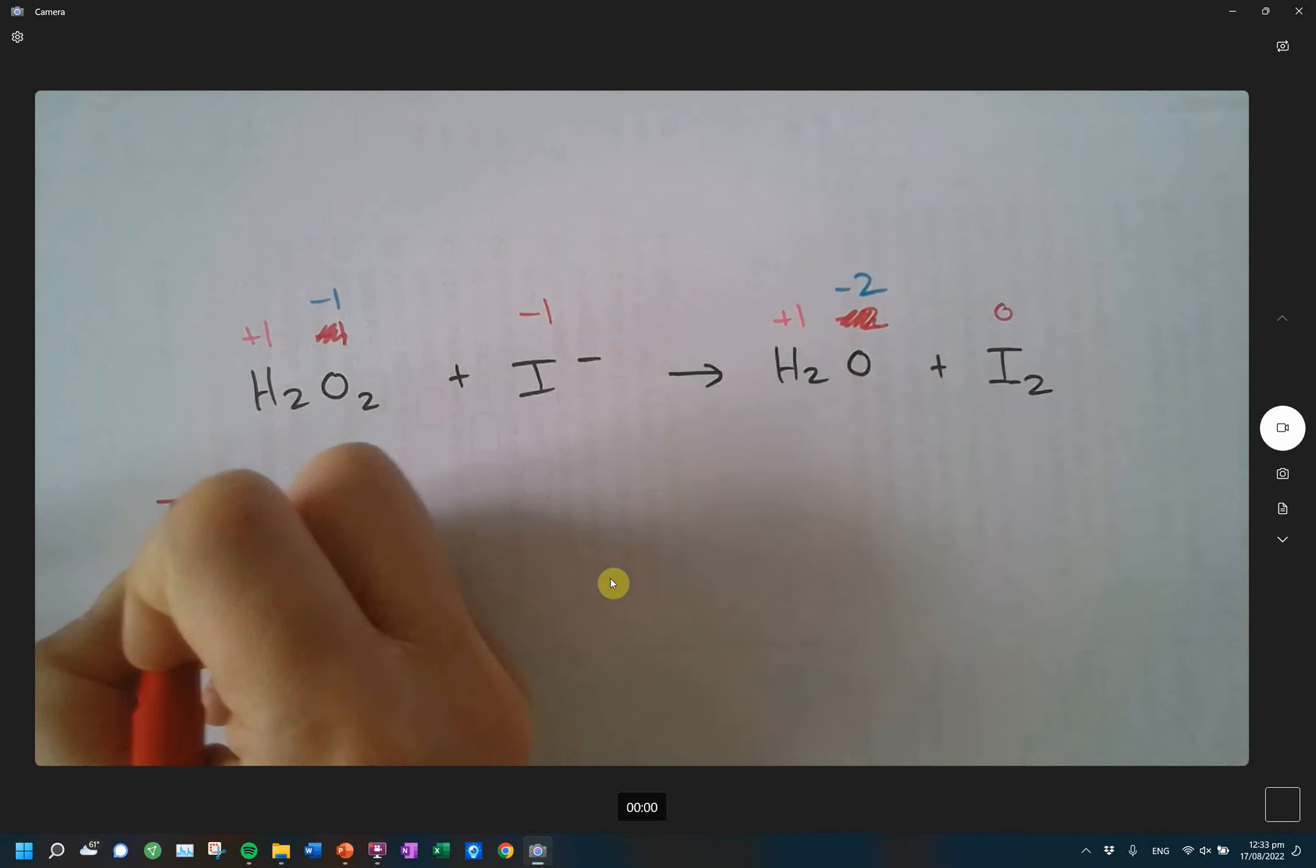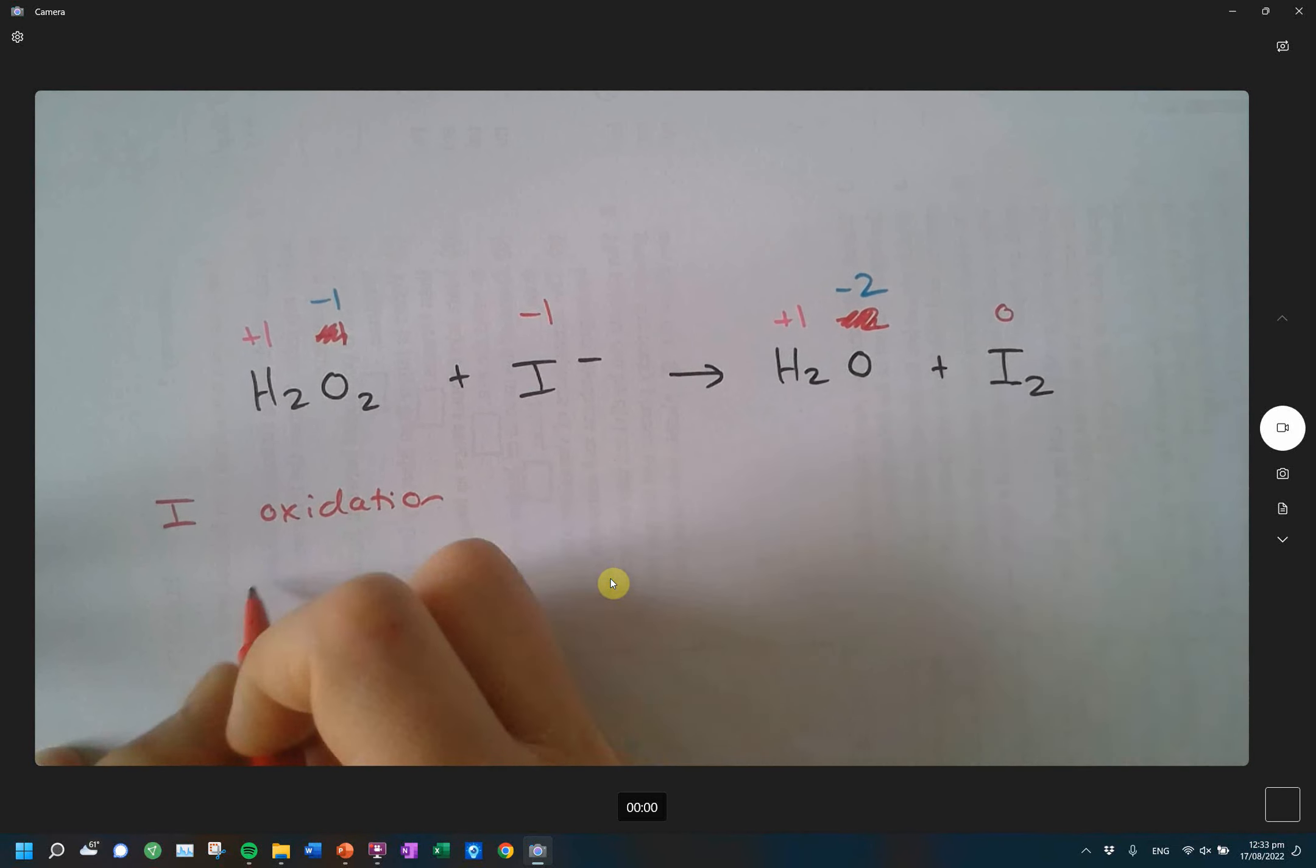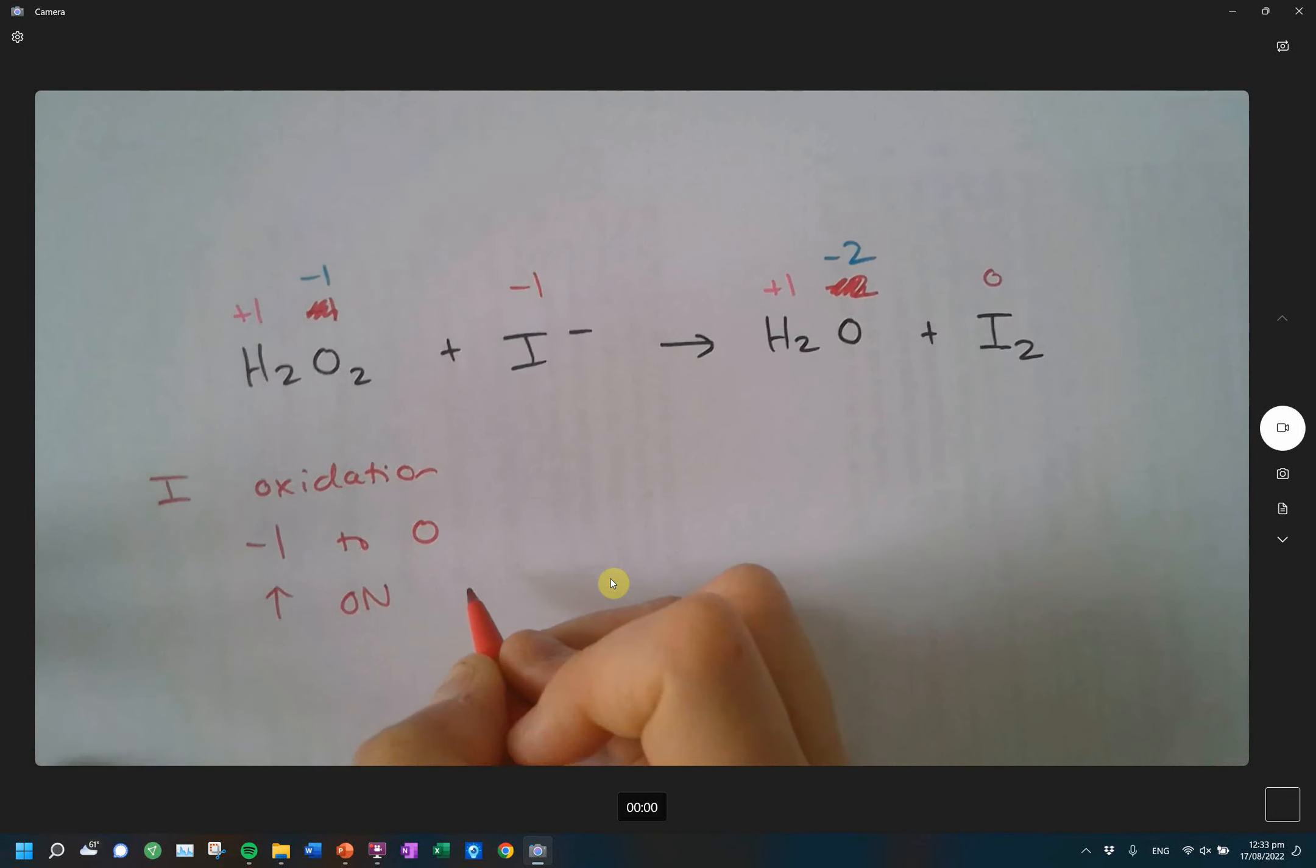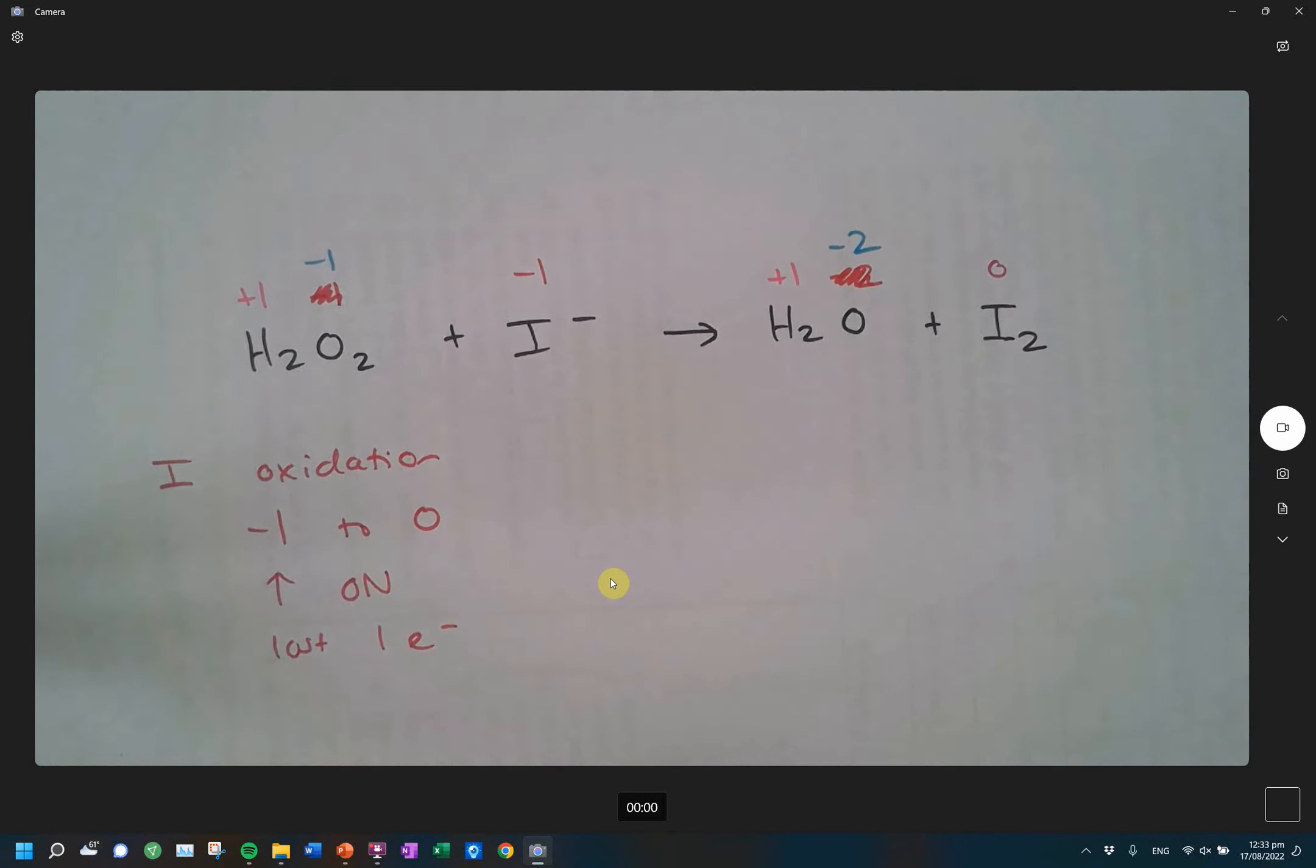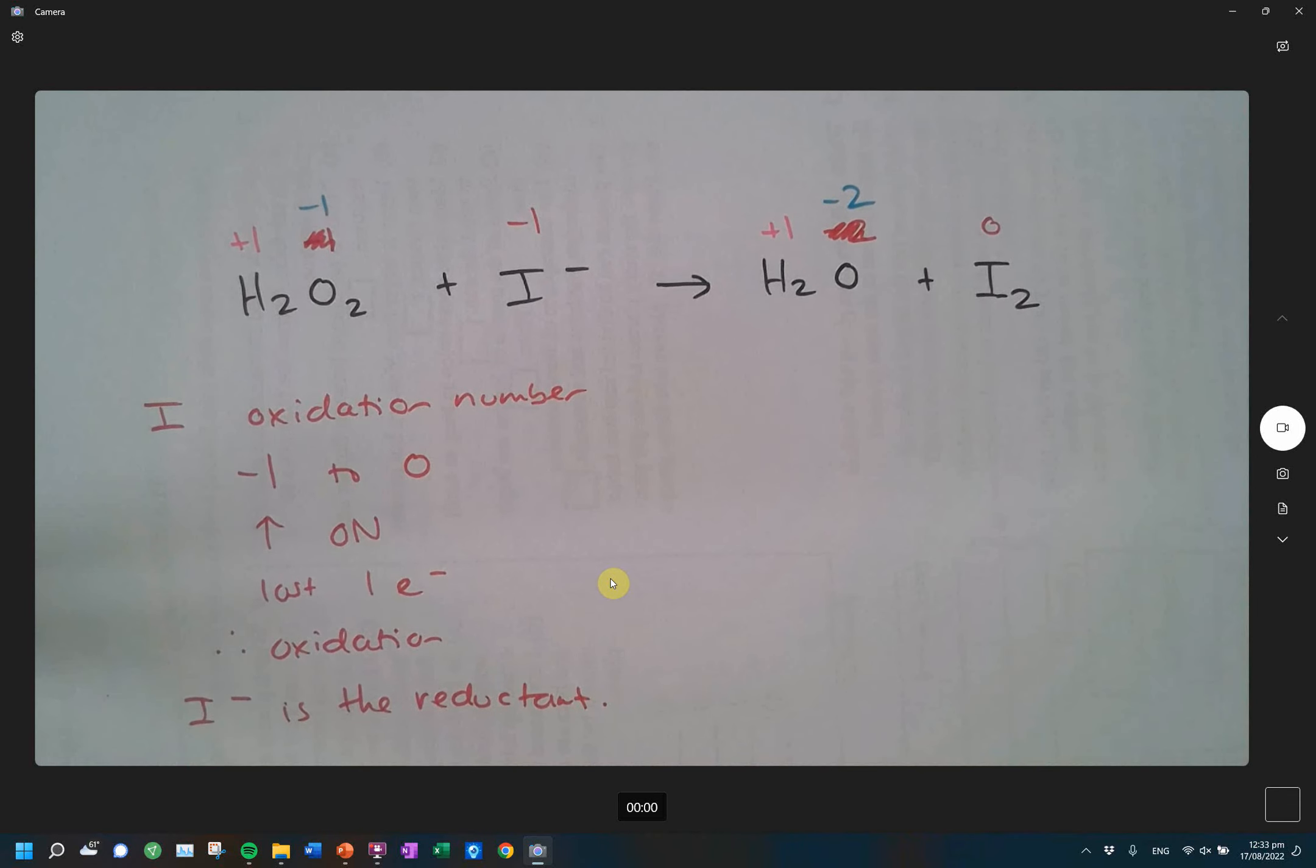So the one that is increasing is my iodine. So we have it having its oxidation number going from negative one to zero. In this case, there's an increase in my oxidation number, and I must have lost one electron in order for that to happen because now I'm going to a more positive number. And therefore, this is my oxidation reaction, making iodide the reductant. Make sure you're tying it back to the specific reactant that is the oxidant or the reductant.